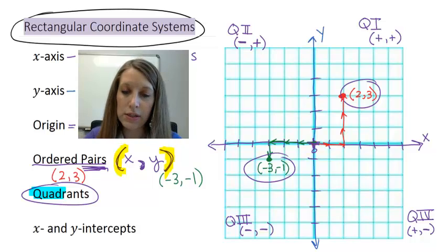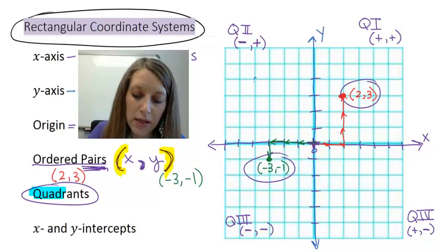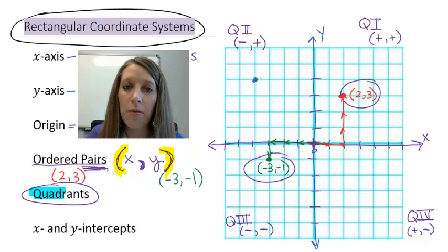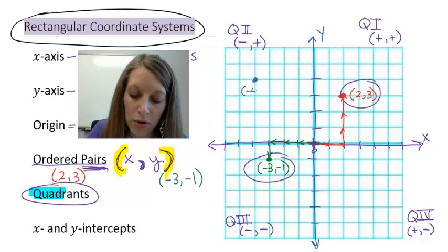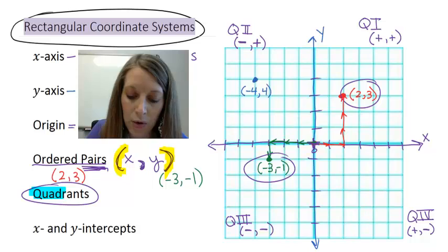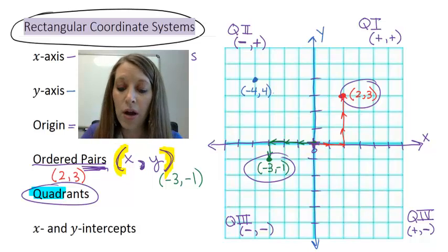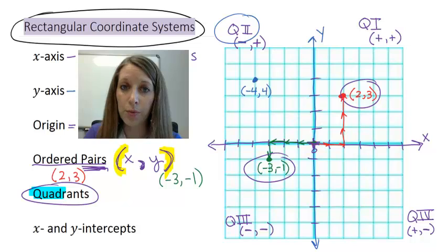So let's just say I have a point here. I might need to come up with the ordered pair that's associated with this point. And you can see it's left four units and up four units. So my ordered pair would be negative four, positive four. And I could say that that is in quadrant two.